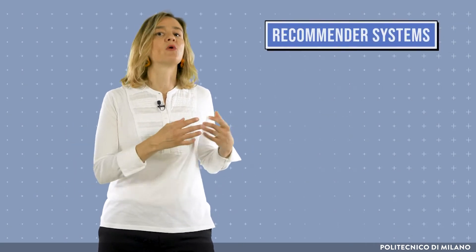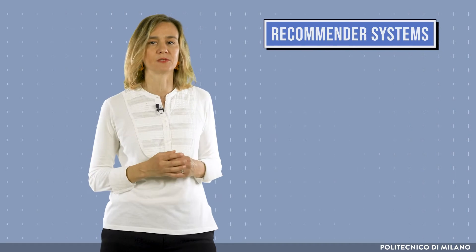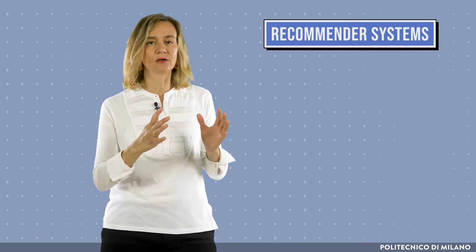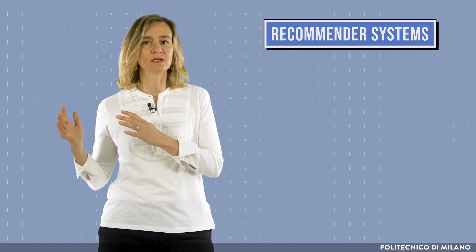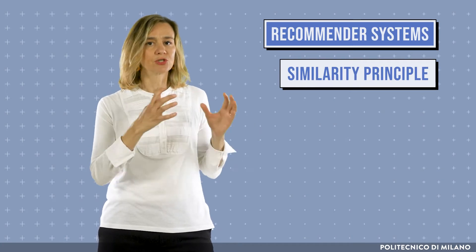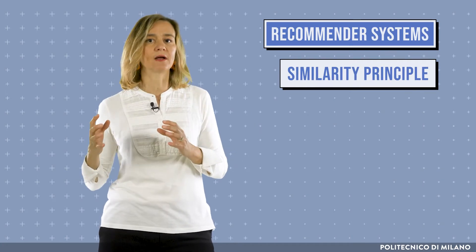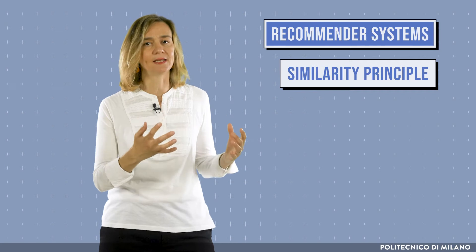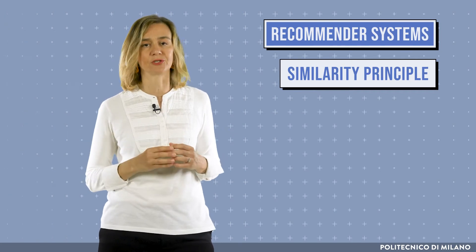Machine learning can be applied to very simple decisions, such as the next video to watch, or the next purchase to make. This is the case of the so-called recommender systems. In this case, the algorithm learns on the basis of a similarity principle. Users showing similar behaviors will maintain it also in the future.